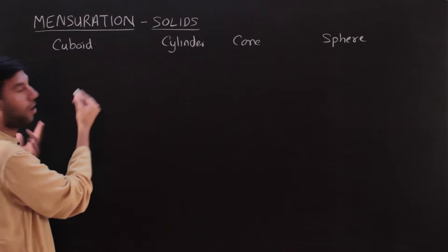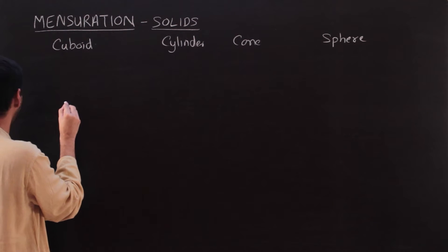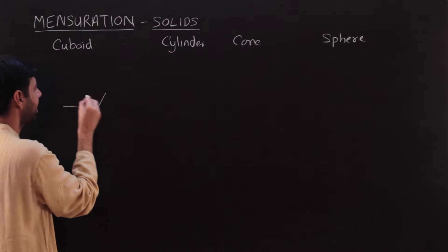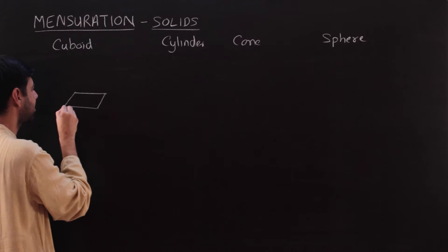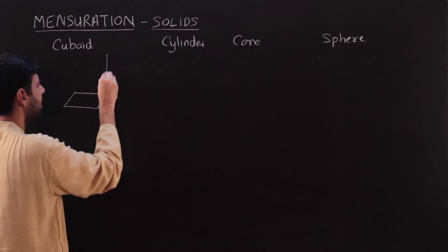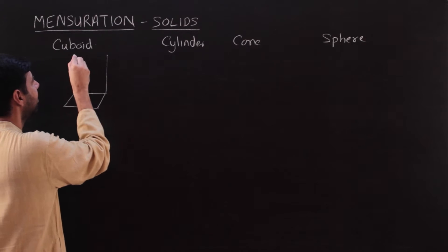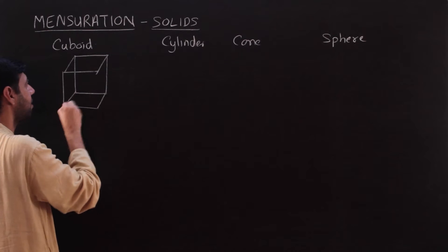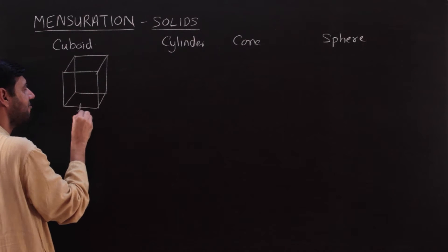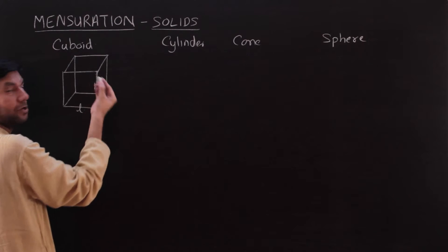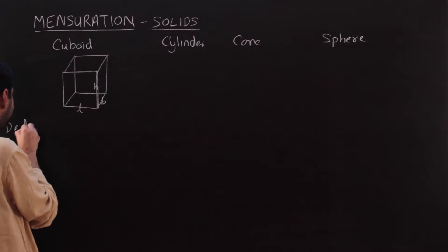What all do I need to define a cuboid? It has some length, it has some breadth, it has a rectangular base, and the same rectangular base is there at the top. It has some height as well. This is how a box is made. To define a box completely, I have a length, I have a breadth, and I have this vertical height.